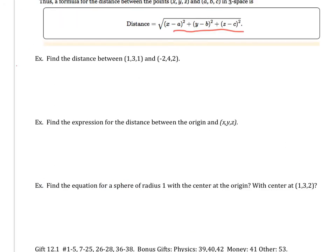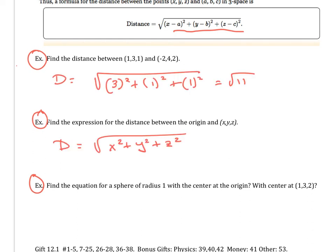Go ahead and try these last three and see what you come up with, and then check with me, but do pause. Check with me and then we'll go from there. So for the first one, I get square root of 11. Double check me on that. The second one, I just get the distance between these points and the origin, which means x minus zero, y minus zero, z minus zero, and you put it into the formula.